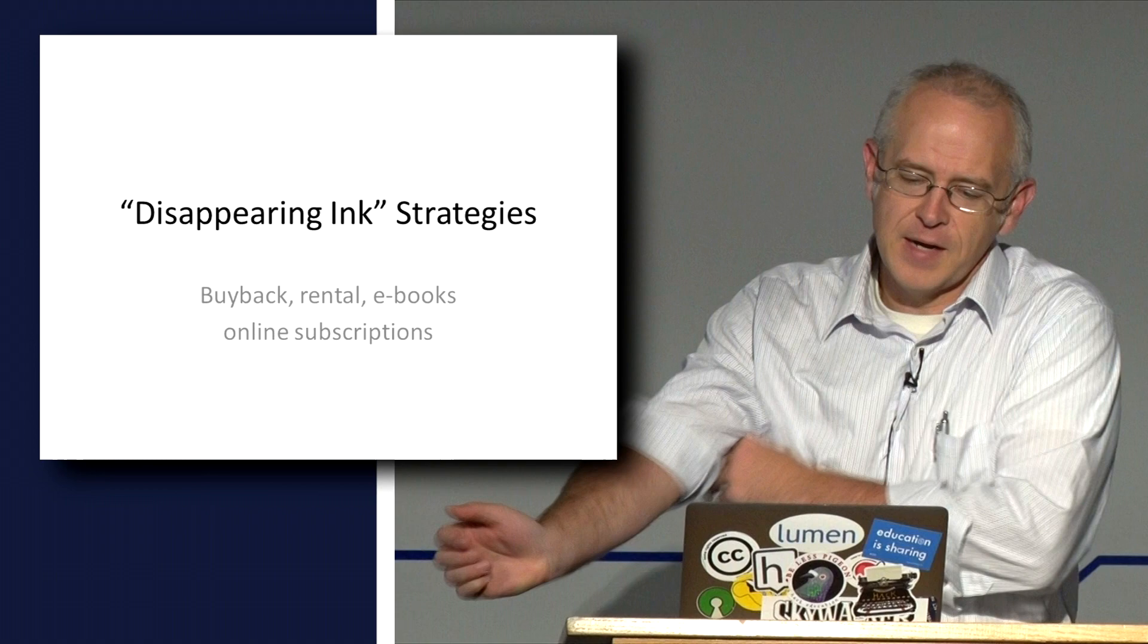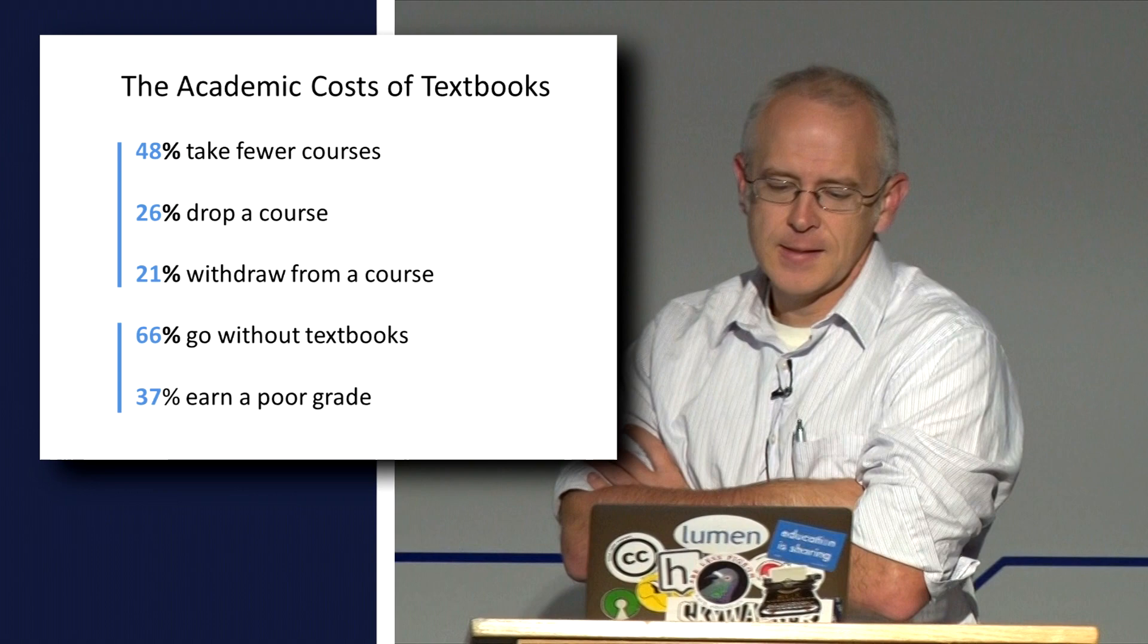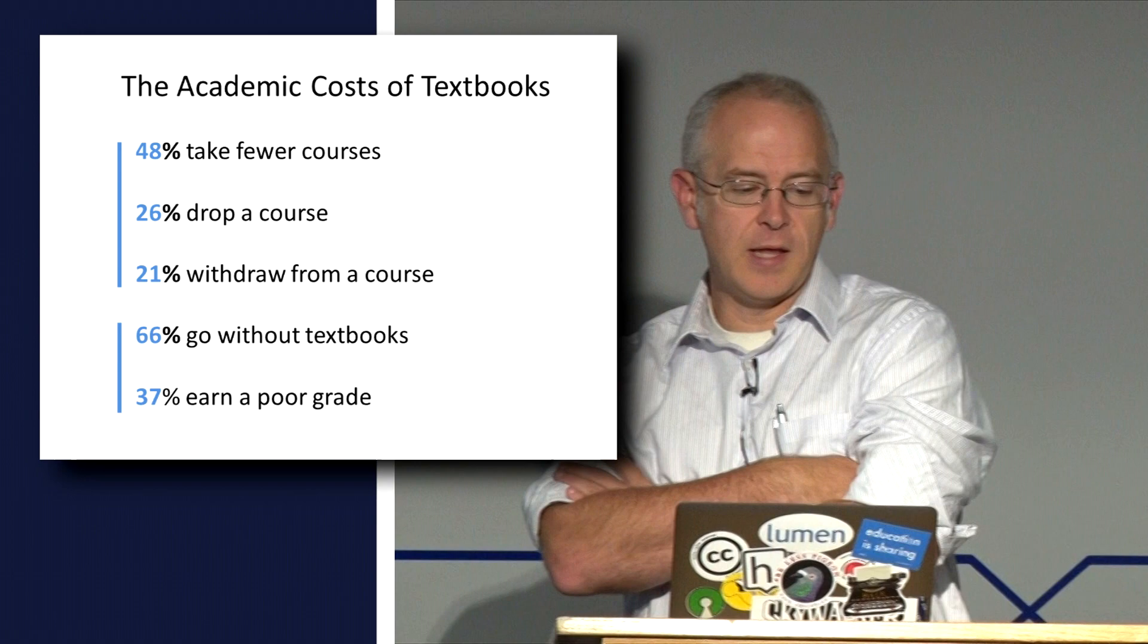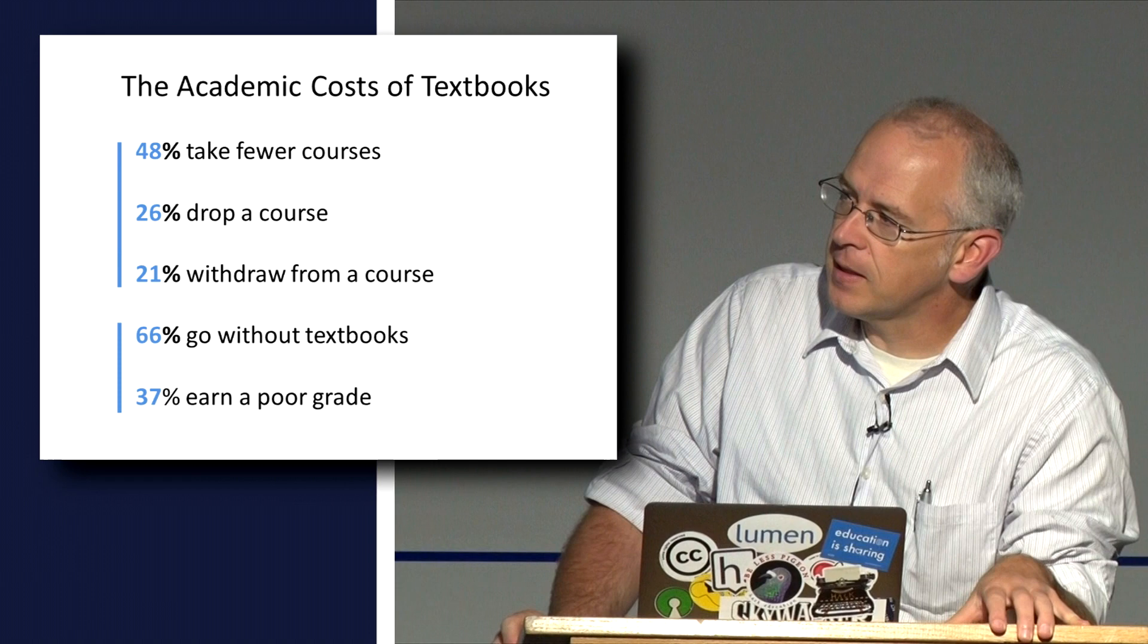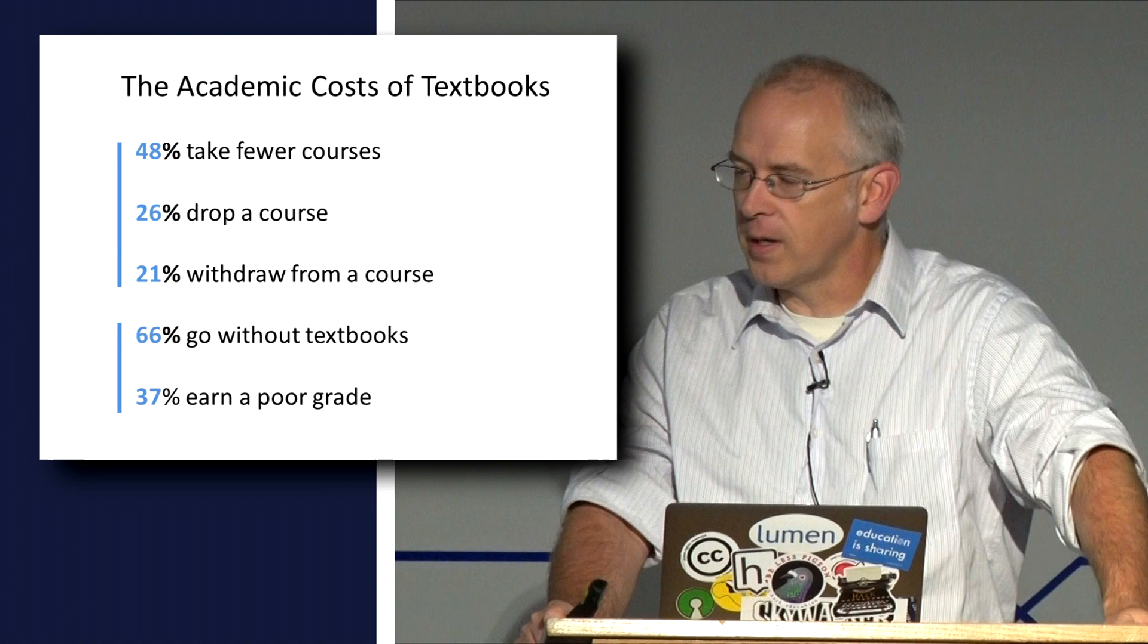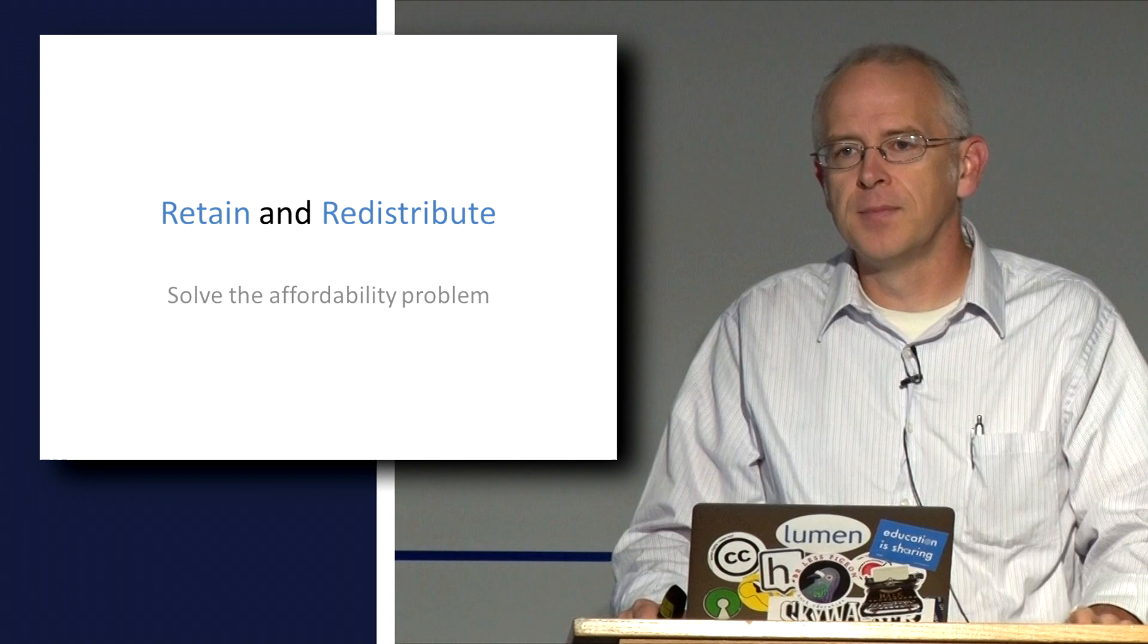There are costs beyond financial costs. There are academic costs of the high costs of textbooks. This is from a survey of about 22,000 students in Florida asking how does your behavior change due to the cost of textbooks? You can see that it slows them down. They take fewer courses, drop courses, withdraw from courses, and earn poor grades in courses. So there are academic costs here as well. In terms of access and affordability, retain and redistribute really solve this problem.